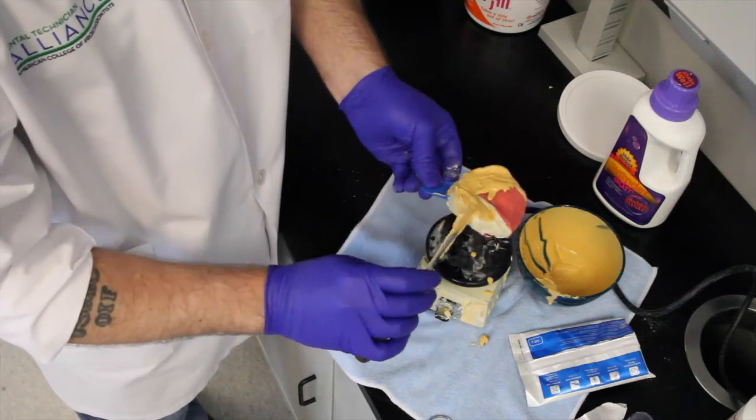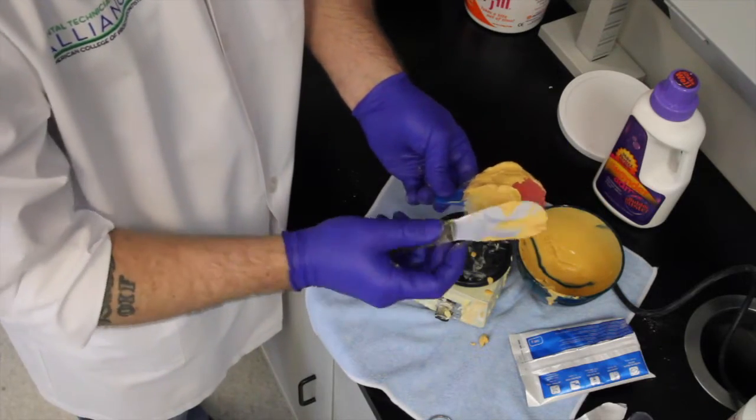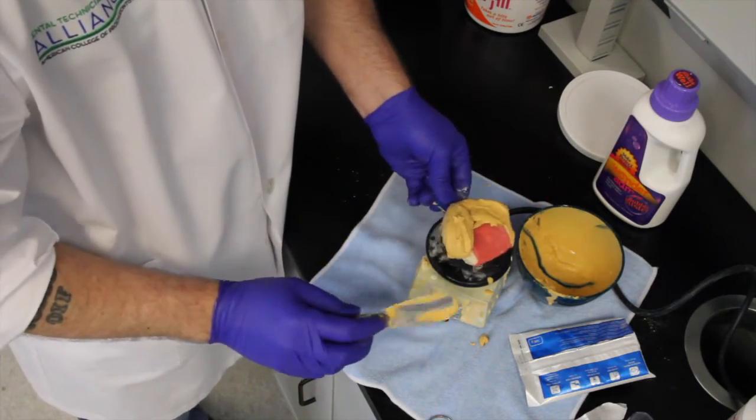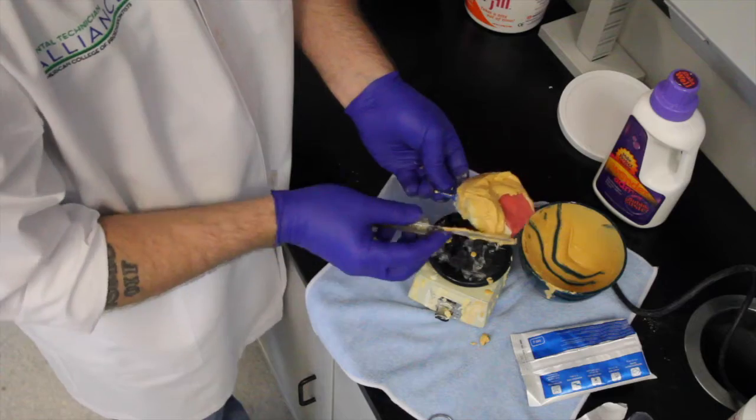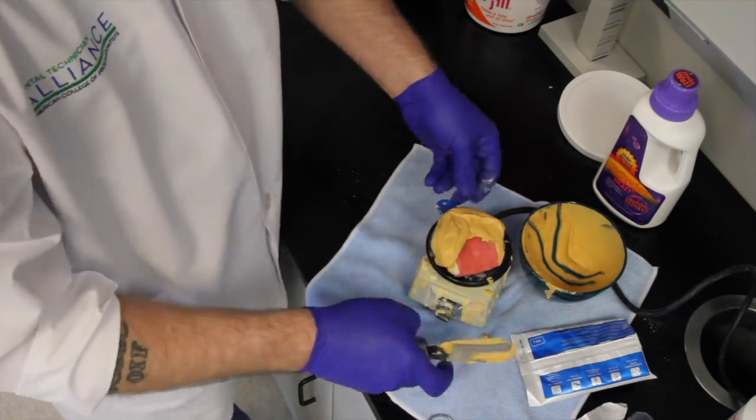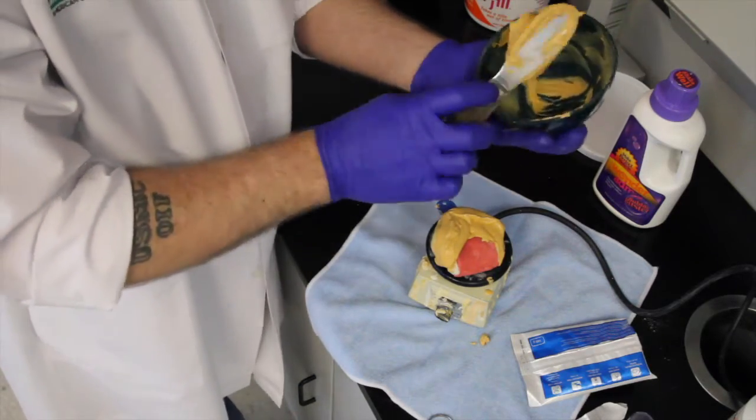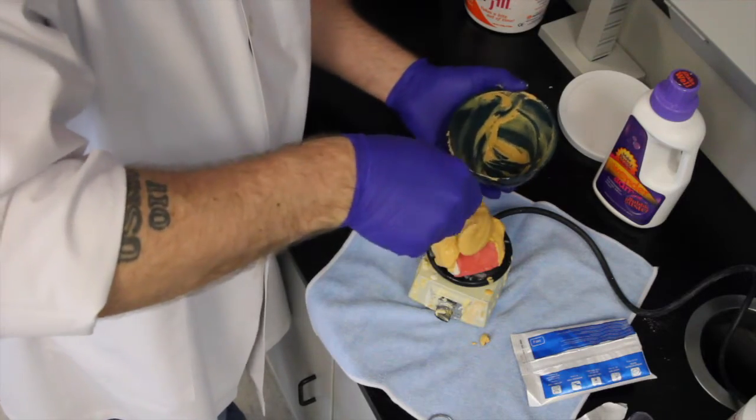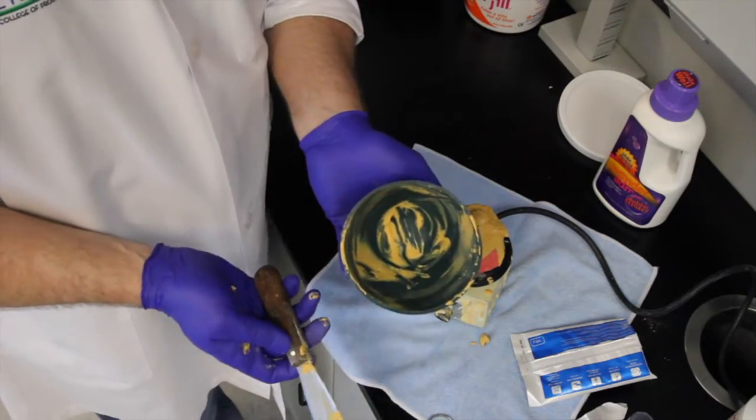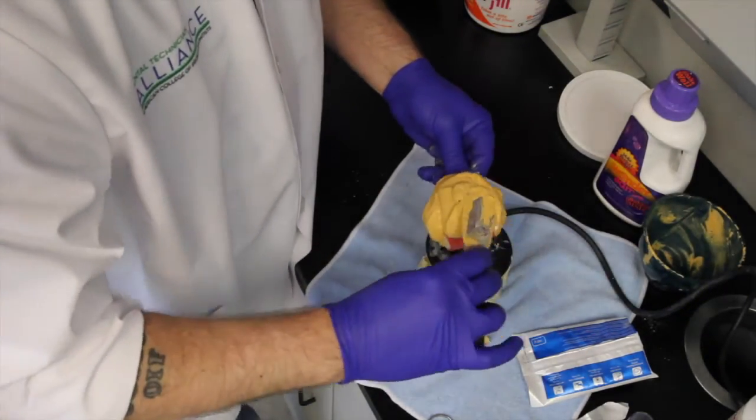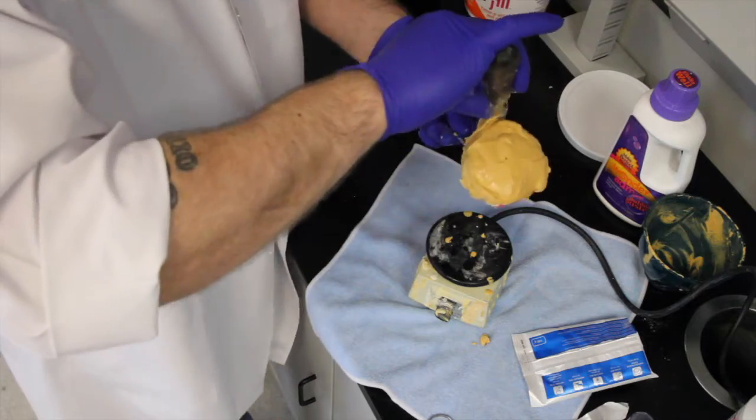From here we're just going to add on this side because we already have the teeth covered. Just going to fill the rest of it in. I'm going to take the rest of the product out of the bowl and put it right there. That's where that tongue space is going to be really nice and hold it for us. Look at all the product is used. There's no waste. Now I'm just going to spatulate it up the retromolar pad. Just keep it on the impression so we don't lock it in.